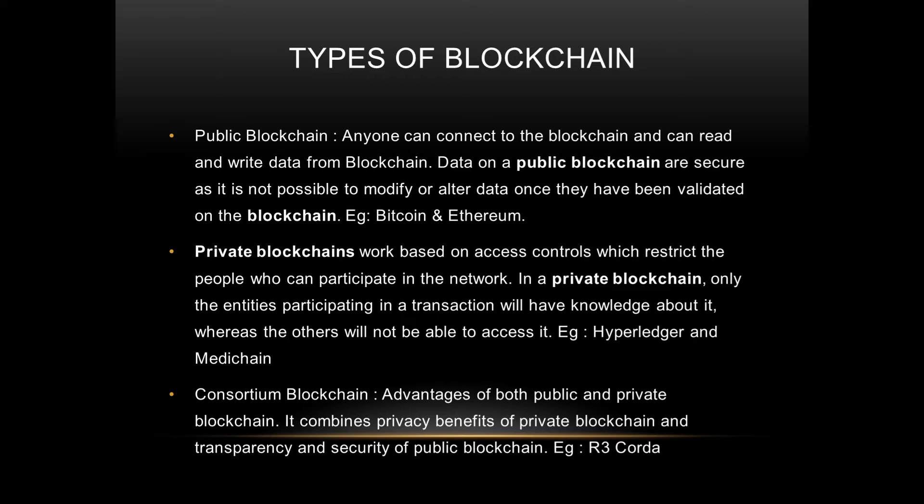Some examples of private or permissioned blockchains are Hyperledger and MediChain — Hyperledger is from IBM. In a consortium blockchain, the advantages of both public and private blockchains are combined. It incorporates the privacy benefits of private blockchain, where only known entities are involved and nobody else can get in.